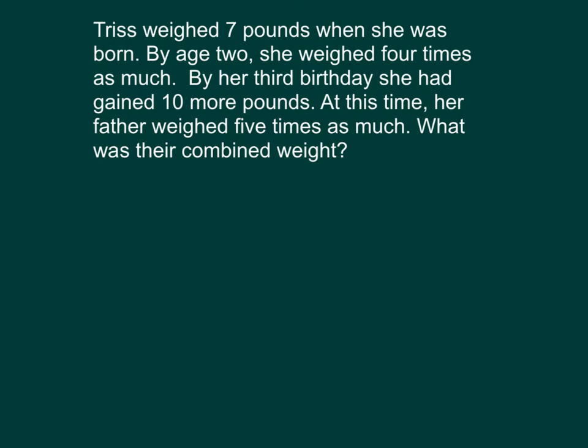Here is another problem. Triss weighed 7 pounds when she was born. By age 2, she weighed four times as much. By her third birthday, she had gained 10 more pounds. At this time, her father weighed five times as much. Let's think about who we are talking about: two people. We are talking about Triss, and we are also talking about the father. What are we talking about? We are talking about their weight. So let's model that problem. We'll model Triss's weight first.